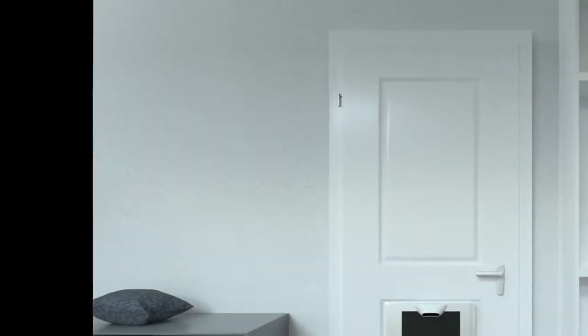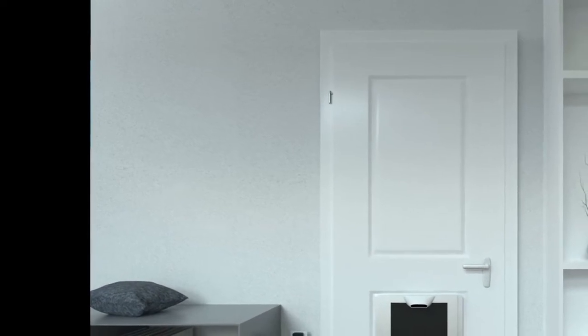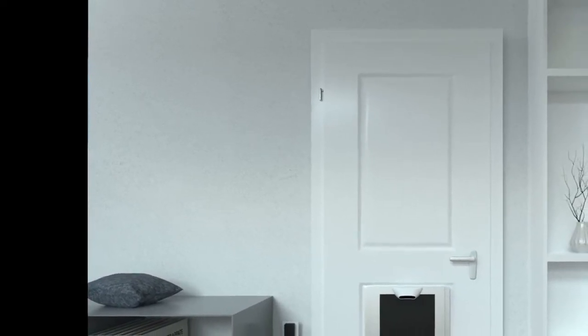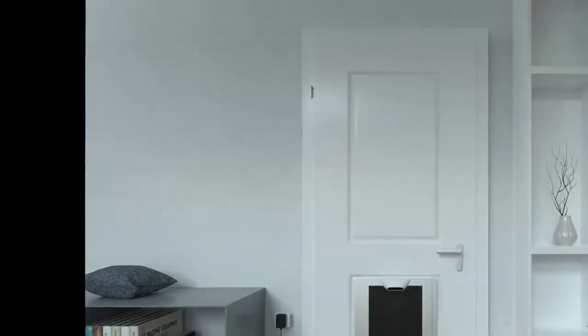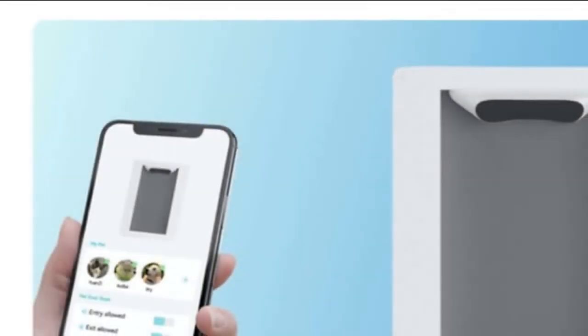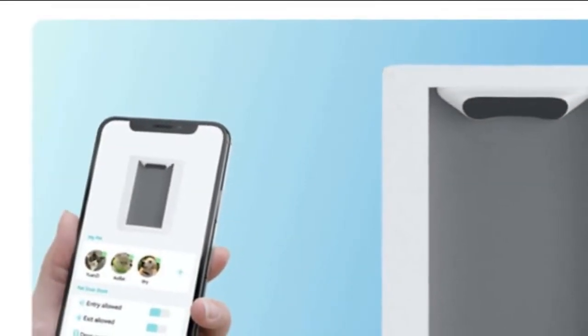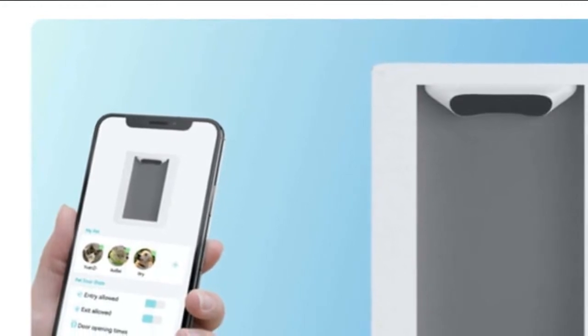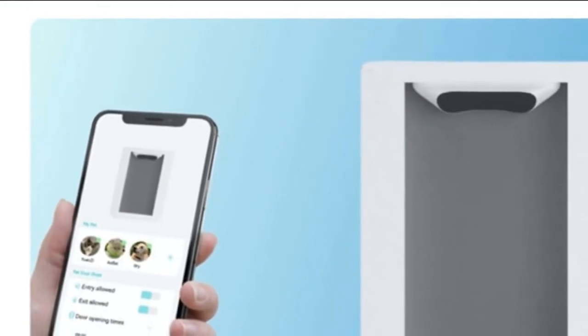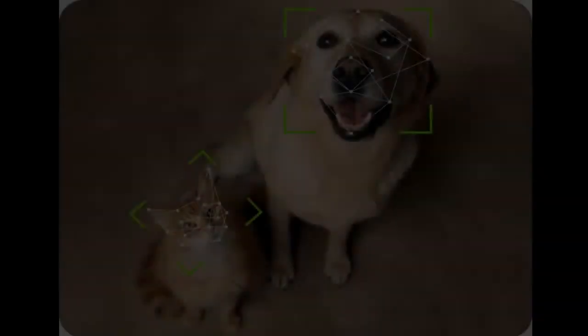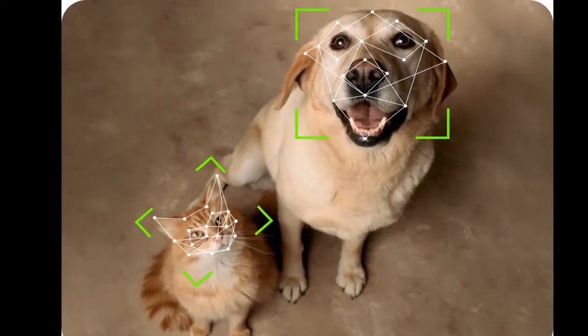The Petvation leverages the same facial recognition tech that's in your phone. To the best of our knowledge, assuming movies haven't lied to us, velociraptors are the only non-human creatures capable of learning how to open and close doors secured with knobs or handles. As a result, pet doors usually rely on just a swinging flap.